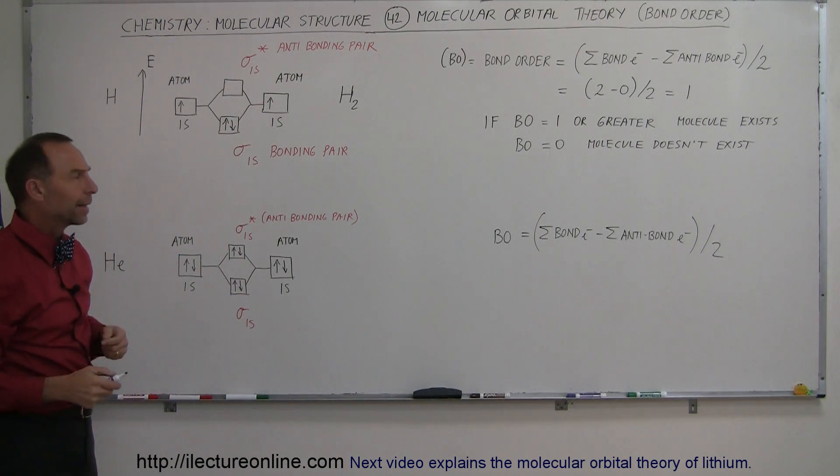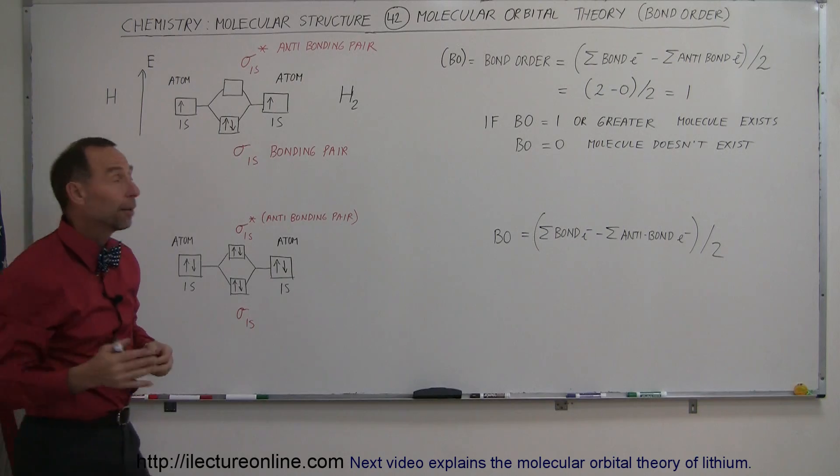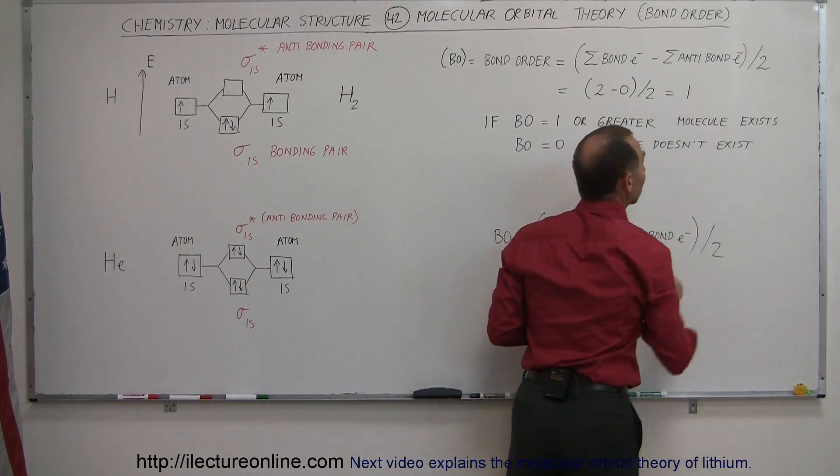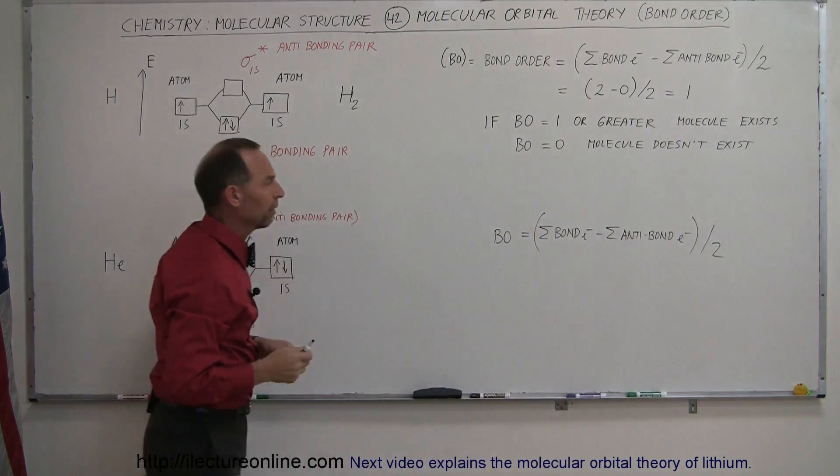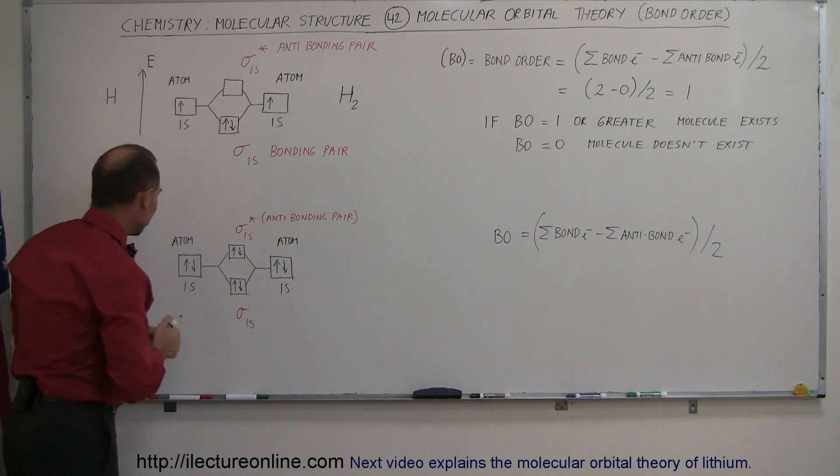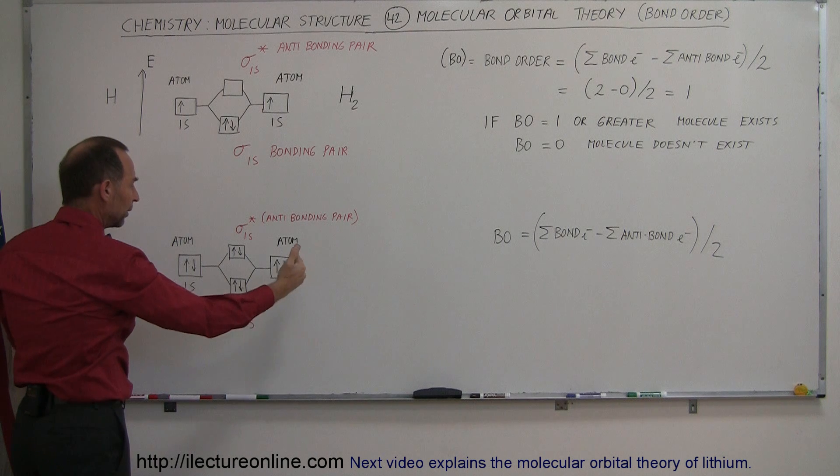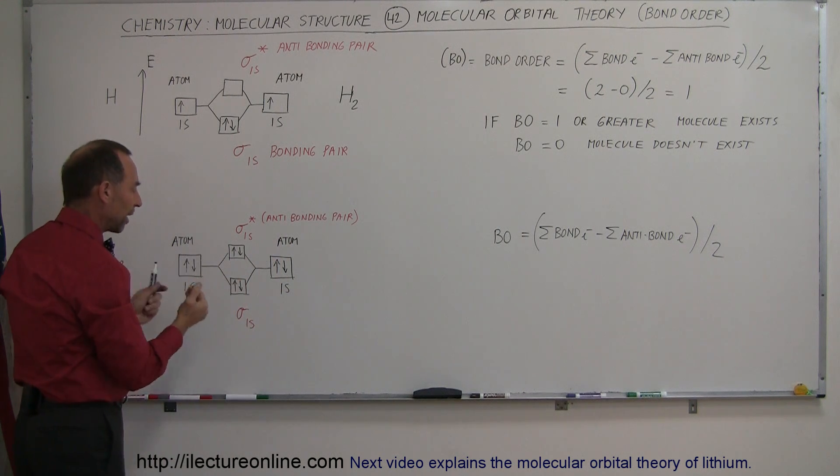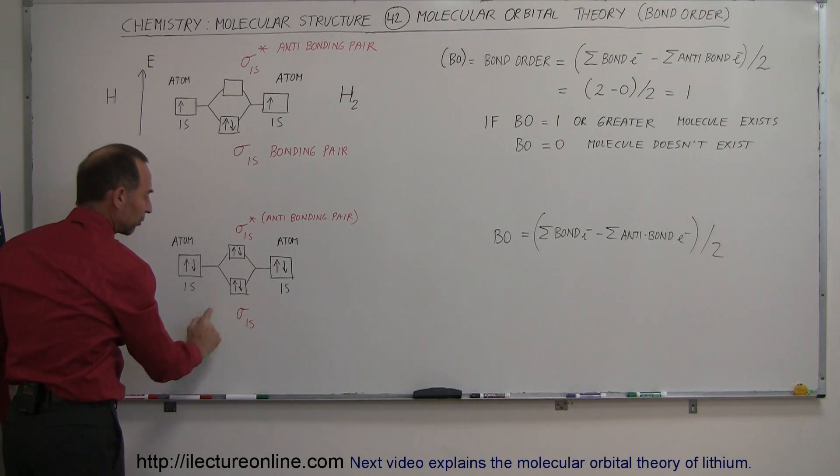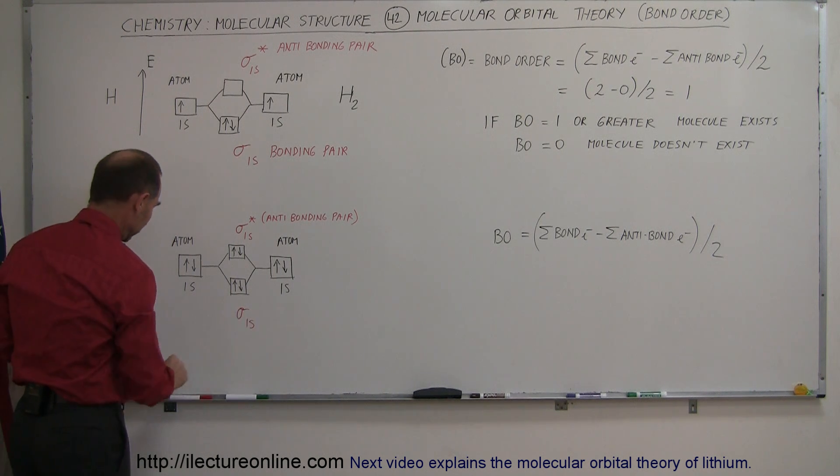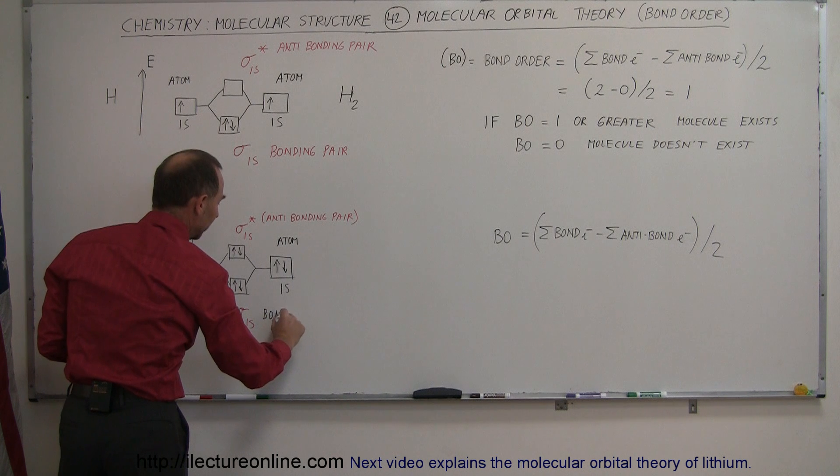But now let's take a look at helium, and we'll get a better look at what an anti-bond electron or anti-bond electron pair is. Since each atom now comes with two electrons in the 1s orbital, when they come together and try to form a bond, the first two electrons will form a sigma bond, a 1s bond, and that's a bonding pair.